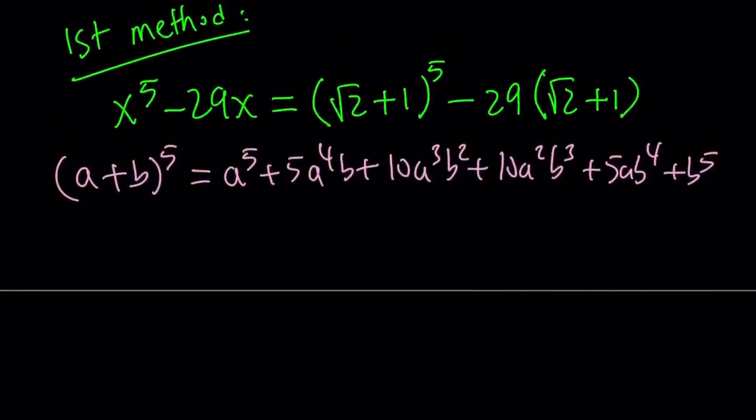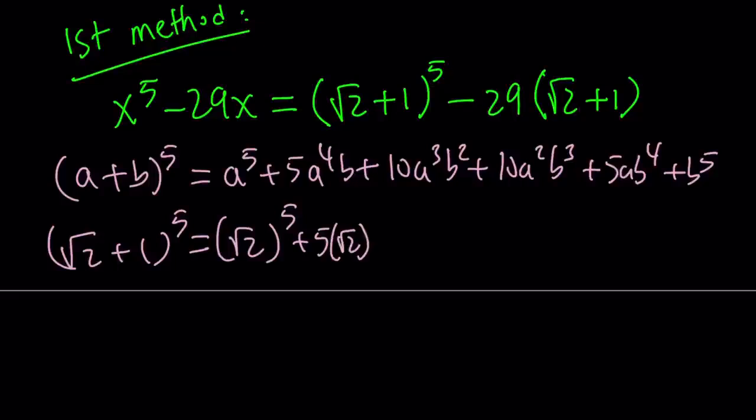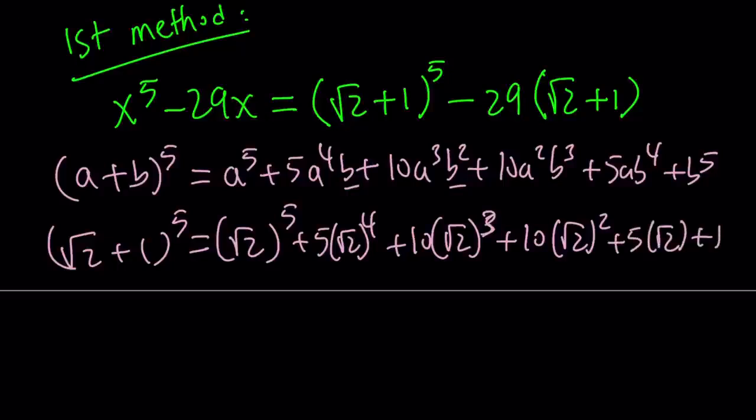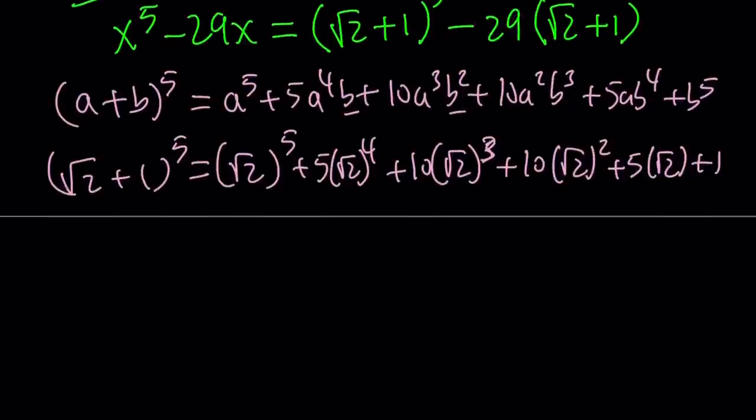So let's go ahead and use it with square root of 2 plus 1. Square root of 2 plus 1 to the 5th power is going to equal the following: square root of 2 to the 5th power plus 5 times square root of 2 to the 4th, and b is 1 so we can totally ignore the values of b, plus 10 times square root of 2 to the 3rd plus 10 times square root of 2 to the 2nd plus 5 times square root of 2 plus 1.